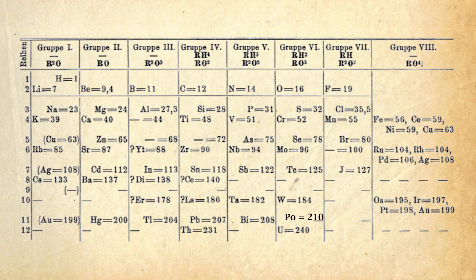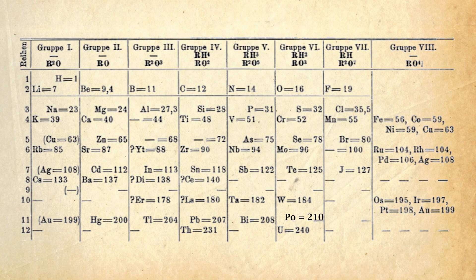Which is absolutely correct. The periodic table I show here is from 1871, meaning that at the time polonium was published, there were a few more elements.